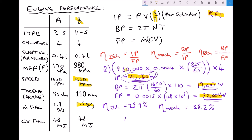Finally the brake thermal efficiency, which represents the overall efficiency of the engine, is the brake power divided by the fuel power — the power transmitted to the road divided by the power provided by the combusted fuel. We have a brake power of 19,007 divided by a fuel power of 72,000, giving a brake thermal efficiency of 26.4%.